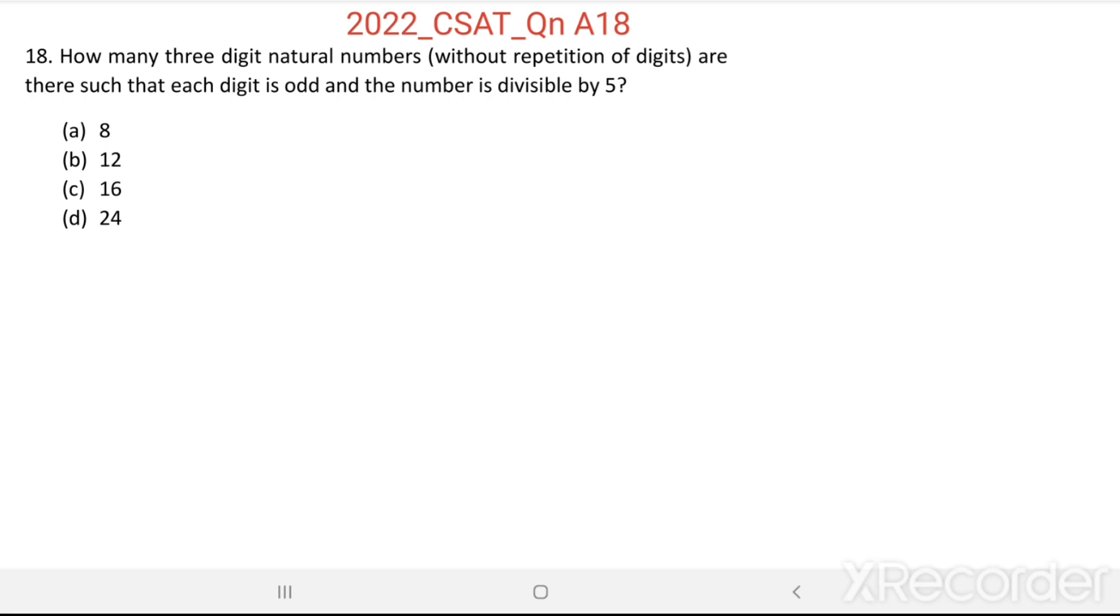Here we want to find how many three-digit natural numbers are there without repetition of digits, each digit is odd, and the number is divisible by 5. Suppose this is the three-digit number, each digit is odd and the number is divisible by 5.